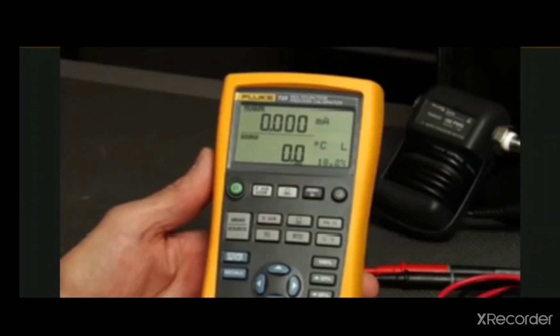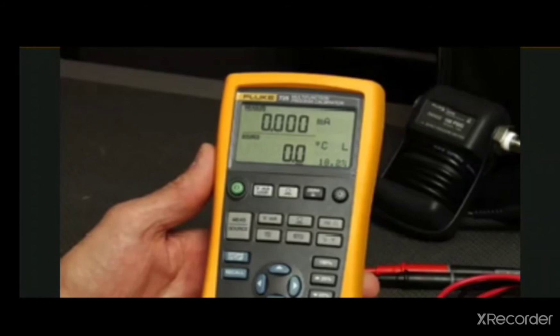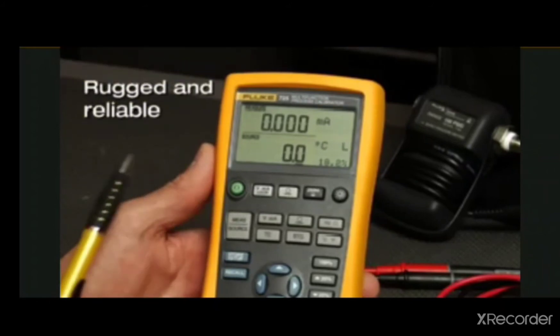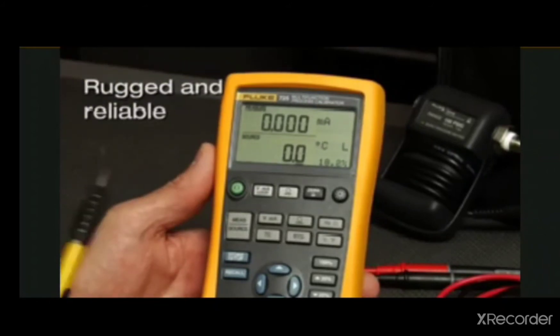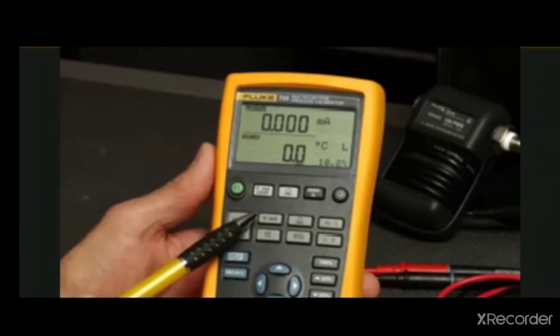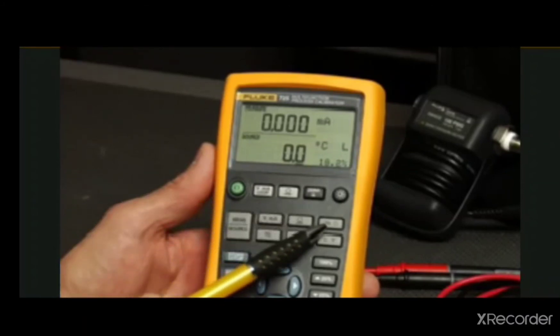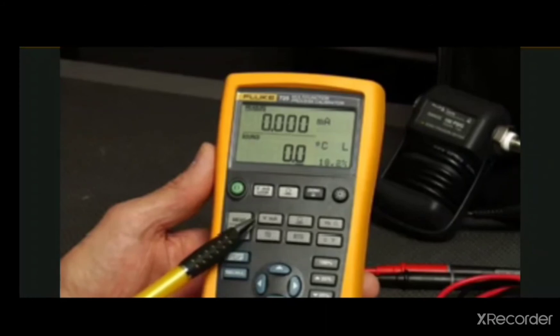The small, streamlined shape is no bigger than a DMM and makes the 725 easy to carry. With this compact size, the 725 is both rugged and reliable to stand up to field use. This multifunction tool can source and measure DC volts, resistance, milliamps, temperature, and frequency right out of the box.